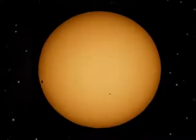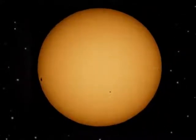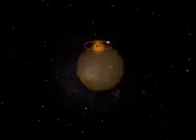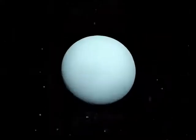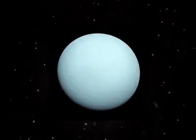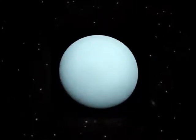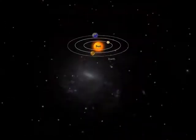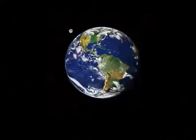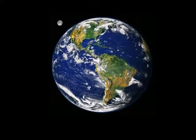Mercury is the closest planet to the Sun and is the eighth largest planet. Venus is the second planet from the Sun and is the sixth largest planet. Earth is the third planet from the Sun and is the fifth largest planet.